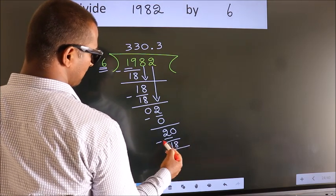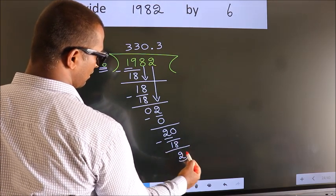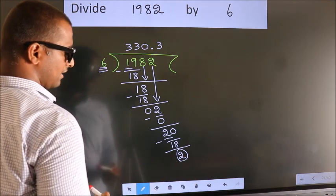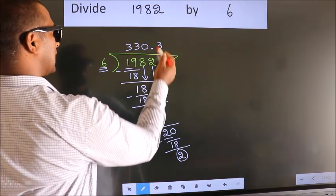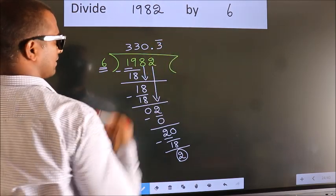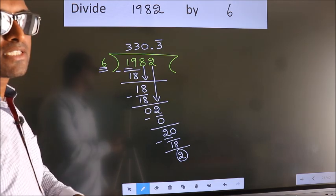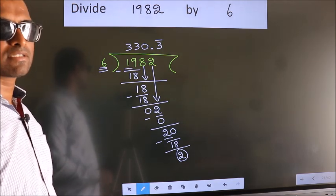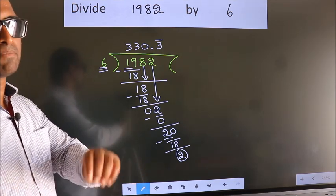Now we subtract, we got 2 again. That means we get a recurring decimal. Did you now understand where the mistake happens? You should not do that mistake.